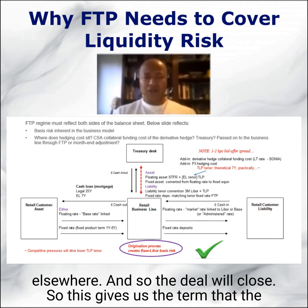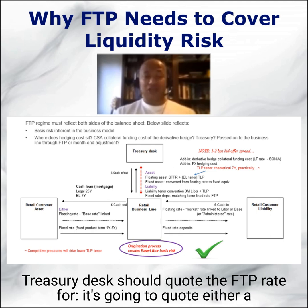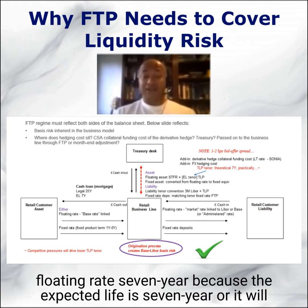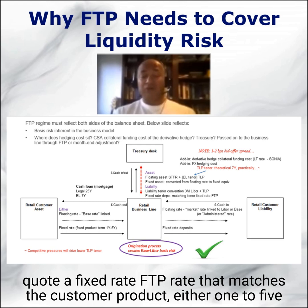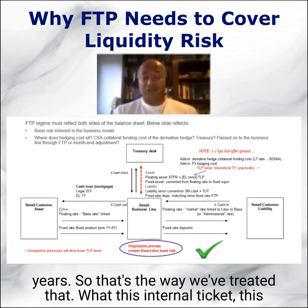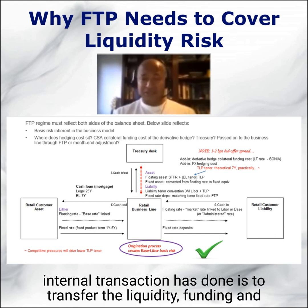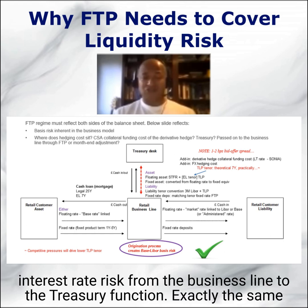This gives us the term that the treasury desk should quote the FTP rate for. It's going to quote either a floating rate — seven year, because the expected life is seven years — or it will quote a fixed rate FTP rate that matches the customer product, either one to five years. This internal transaction has transferred the liquidity, funding, and interest rate from the business line to the treasury function.